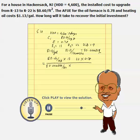That is times the difference between the two R values, which is 22 minus 13, giving 9, times heating degree days 4,600, times 24. When you do this calculation, it turns out to be 15.5 years as the payback period.